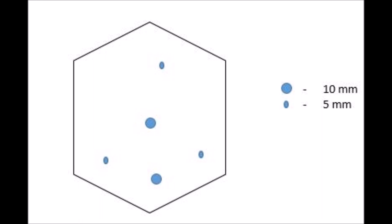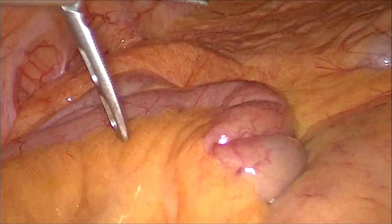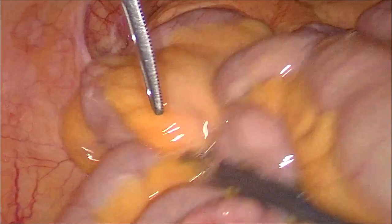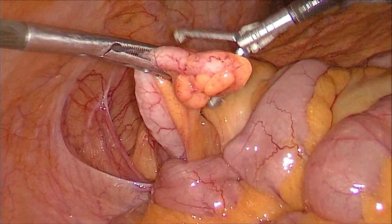The patient was in split leg position. The umbilical and suprapubic ports were 10 mm and the rest were 5 mm. The epigastric and suprapubic ports were slightly towards the left. The surgeon stands in between the legs, and the patient is kept slightly in Trendelenburg and right side up position so as to identify the right colon.